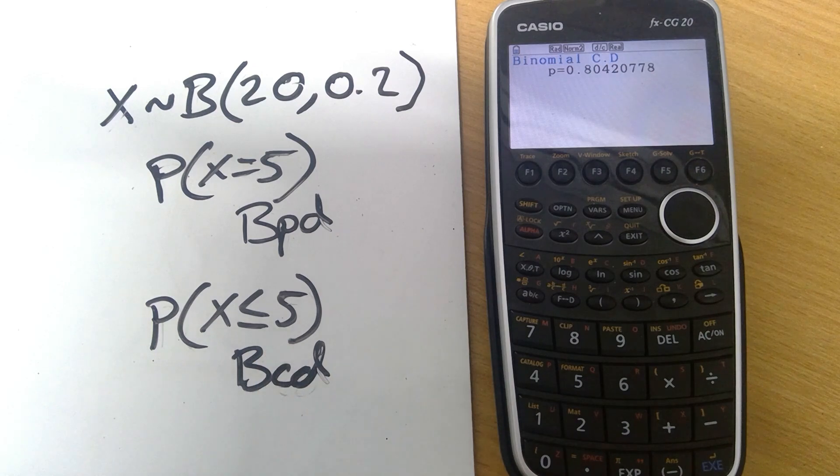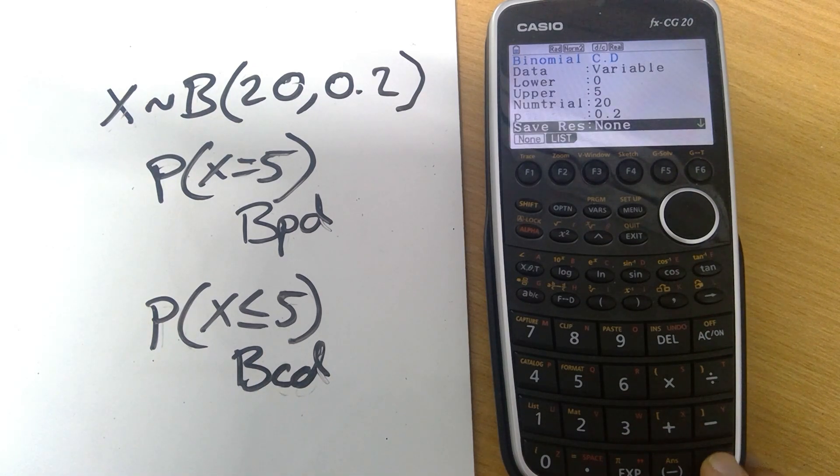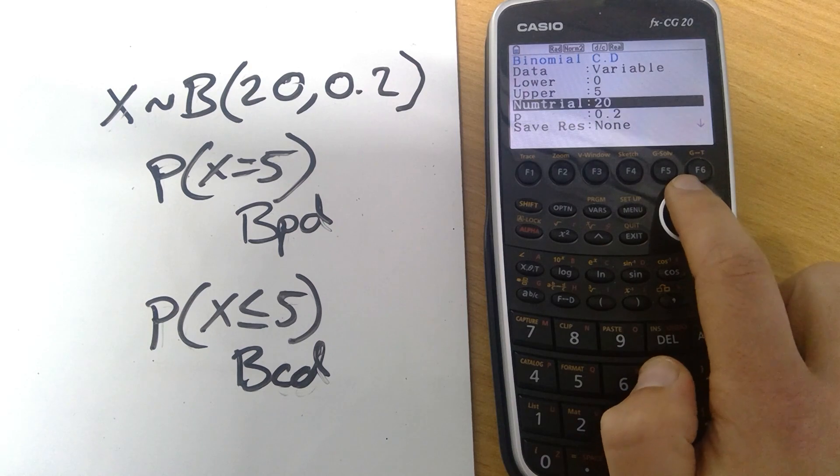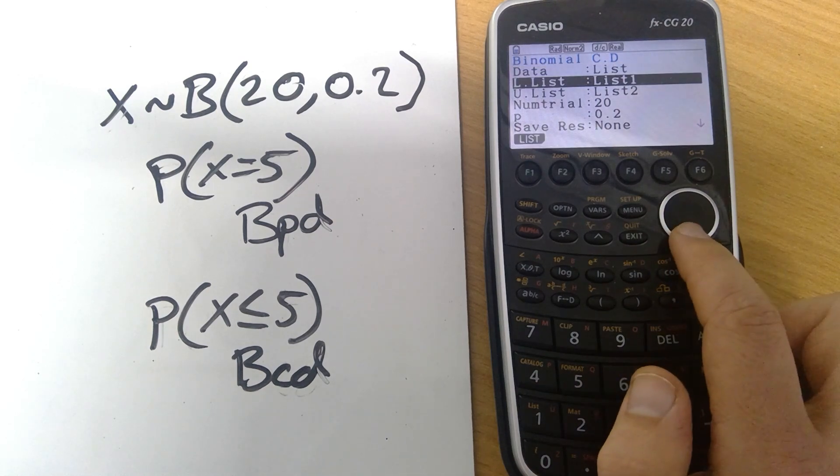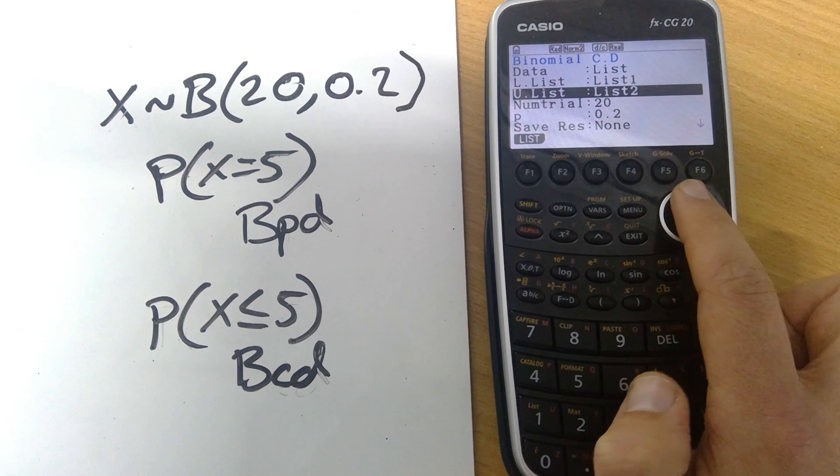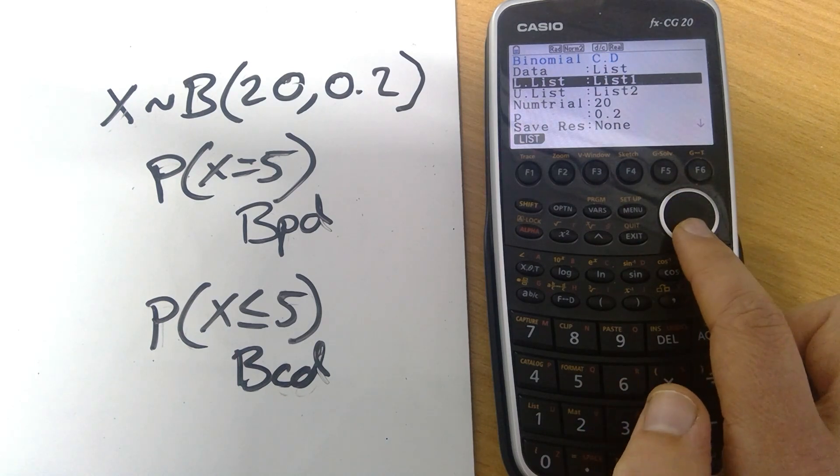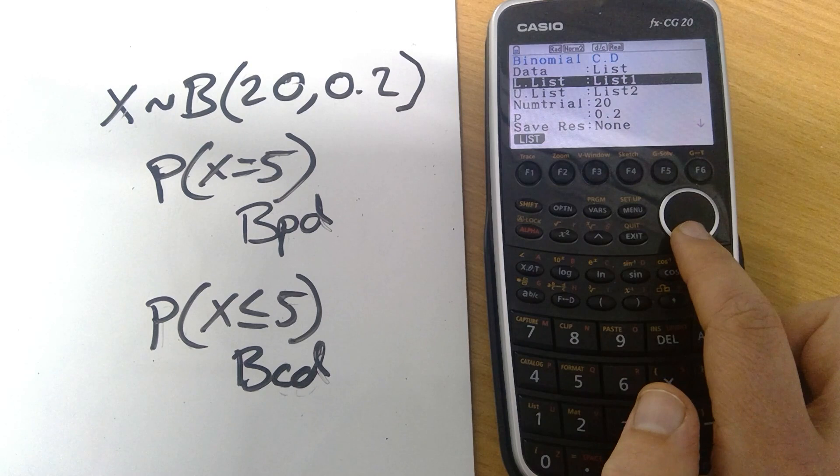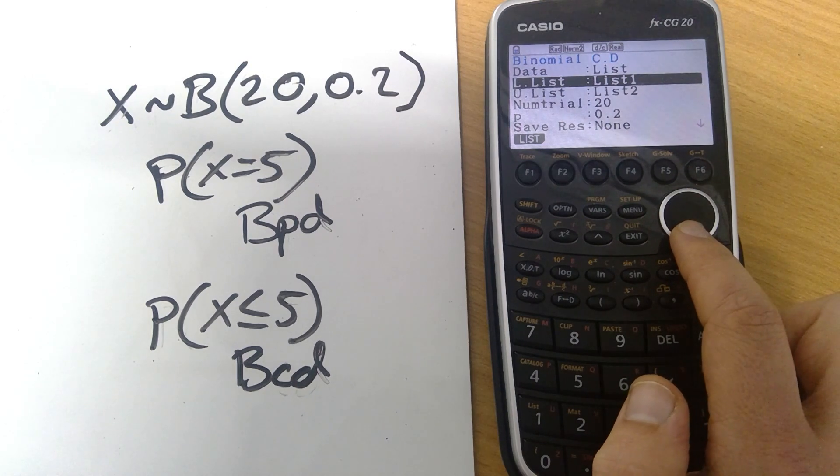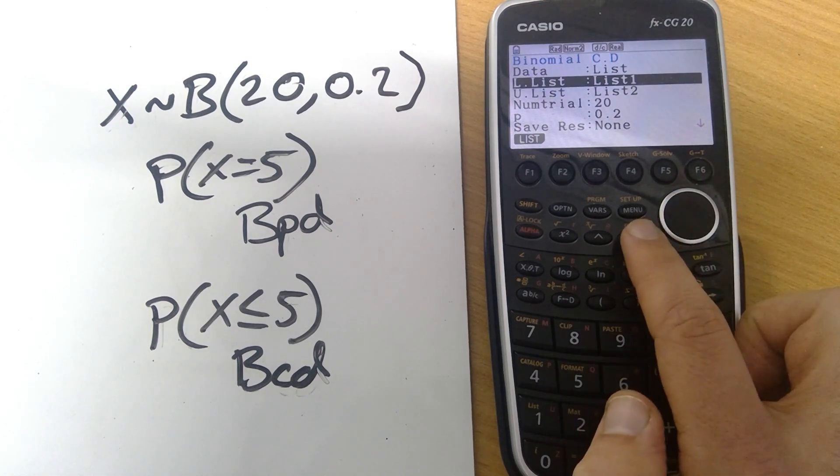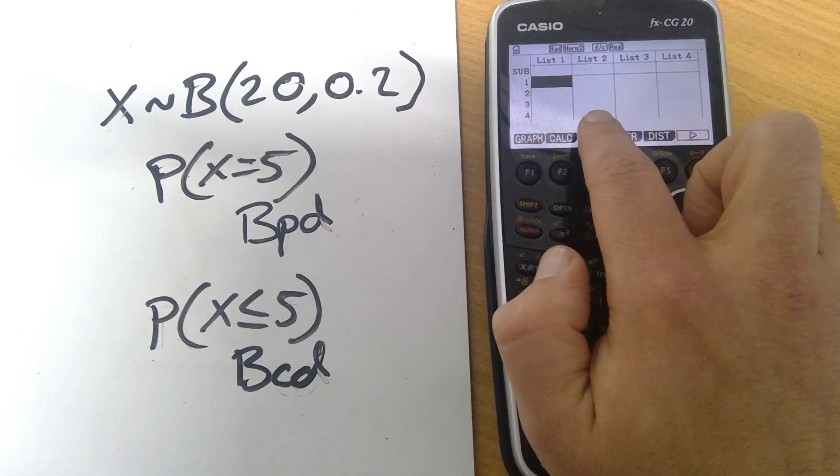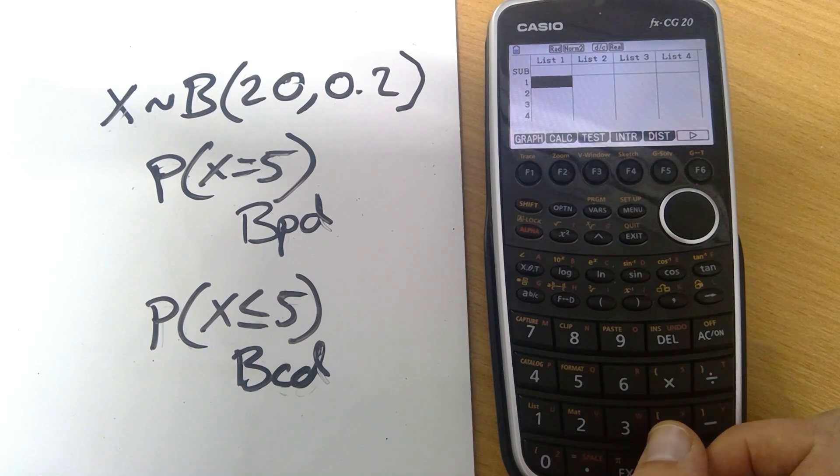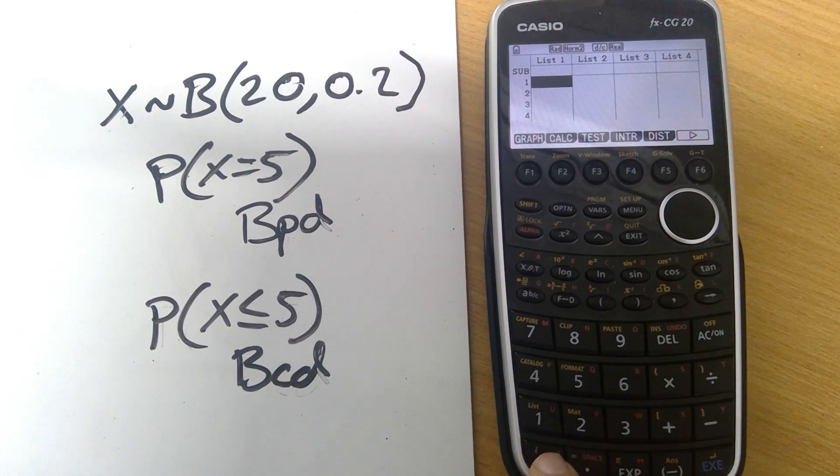So nice and straightforward. If instead I want to create a list of values or reproduce the tables that you get in formula booklets we get a few different options here. We've got L list and U list, this is the lower and upper values that we want it to calculate. It's got to take these values from some lists so list 1 and list 2. I'm going to go back into my list and set these up so list 1 is going to be my lower values, list 2 is going to be my upper values.